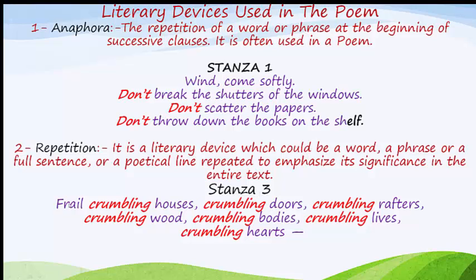Looking at stanza three: 'frail crumbling houses, crumbling doors, crumbling rafters, crumbling wood, crumbling bodies, crumbling lives, crumbling hearts.' The word 'crumbling' is repeatedly used throughout this line to emphasize its significance. So 'crumbling' is an example of the literary device repetition.